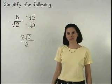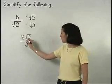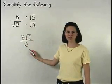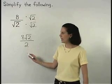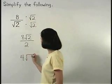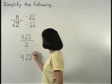As our final step, we can divide the 8 that is outside the radical in the numerator by the 2 in the denominator. 8 divided by 2 is 4, so our final answer is 4 root 2.